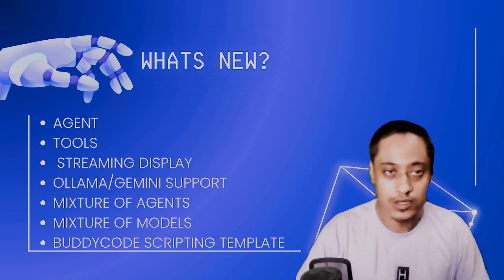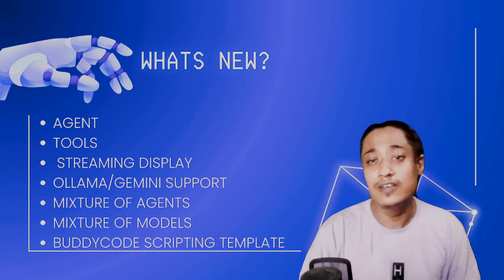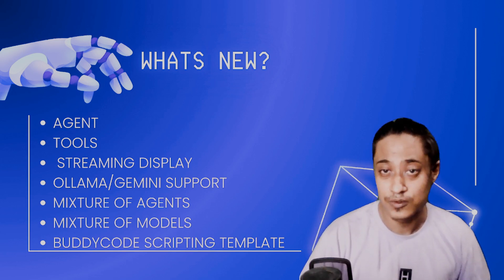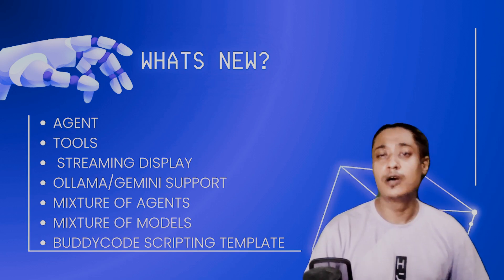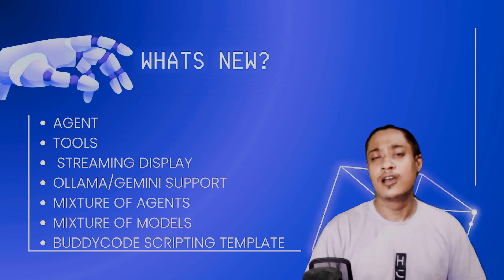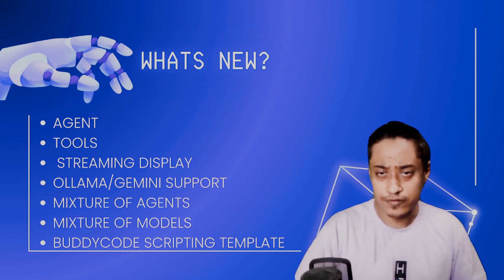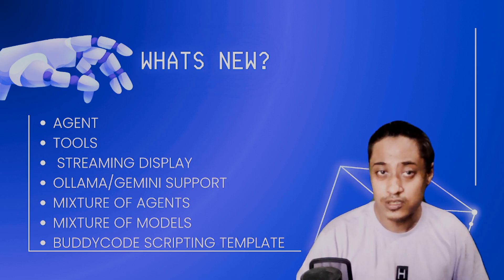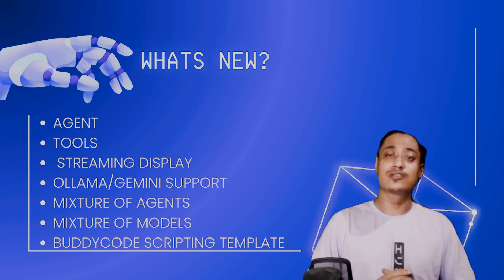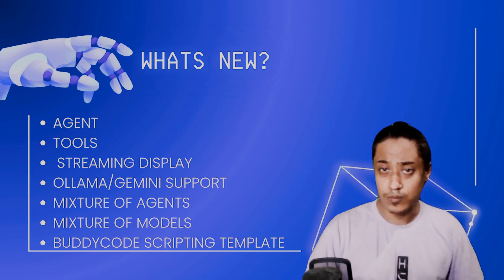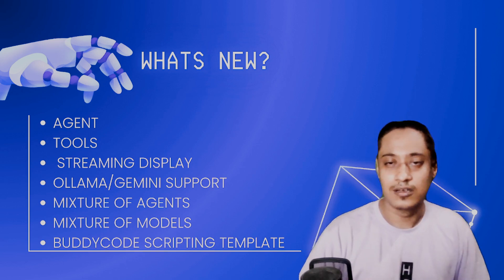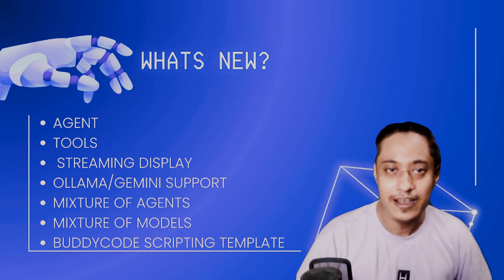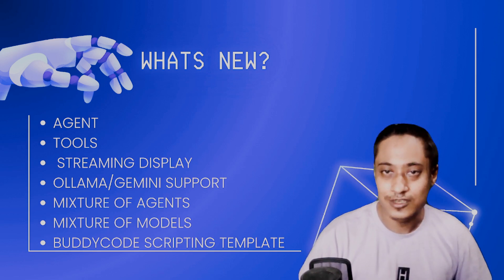We have Ollama support and also Gemini support. Ollama hosts a plethora of open-source large language models, and for the latest it has LLaMA 3.1, which was released just two to three days back. You'll be able to use that as well — we have updated BuddyCode for it.